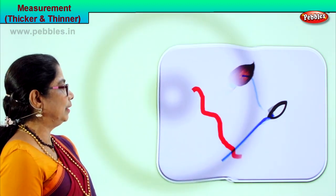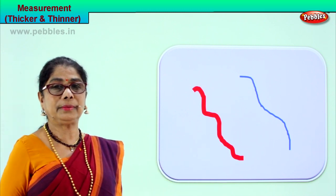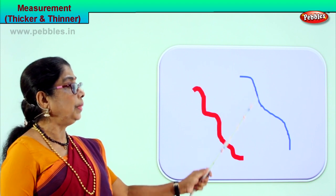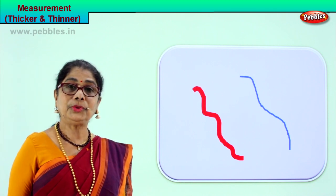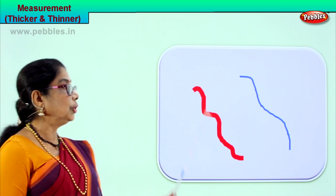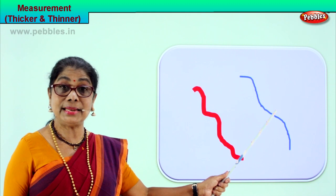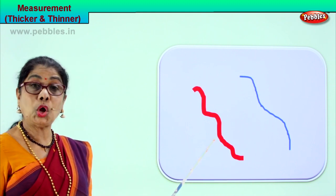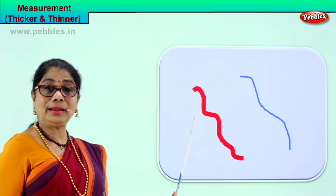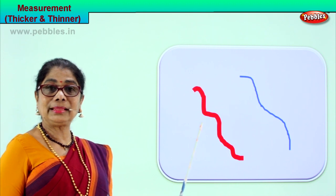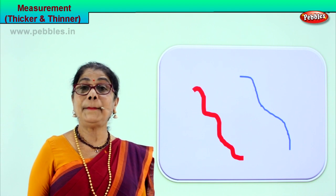Look what you have here. You have two lines painted. There is a thin line of paint and there is a thick line of paint. You can use a thick brush to paint a thick line and a thin brush to paint a thin line. This line is thinner than this line. Or, we say this line is thicker than this line. Thicker, thinner. Let's look at another picture.